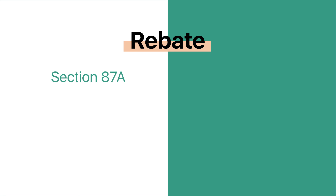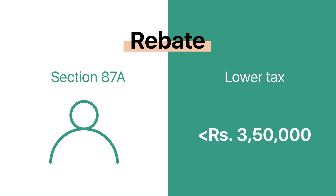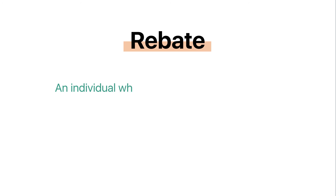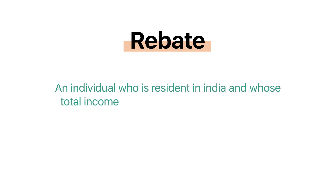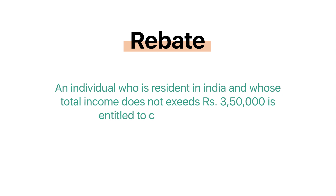Rebate under Section 87A provides for a marginally lower tax payment from individuals earning below a specified limit. According to the Income Tax Department, an individual who is resident in India and whose total income does not exceed ₹3,50,000 is entitled to claim rebate under Section 87A.